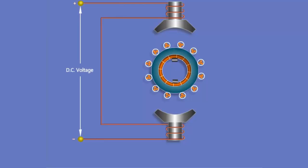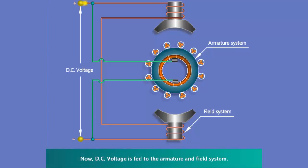This animation shows a cross-sectional view of armature and field system of DC motor. Now, DC voltage is fed to the armature and field system.